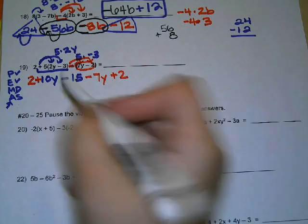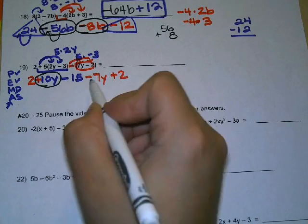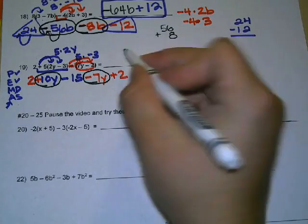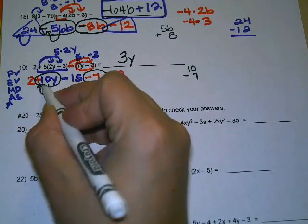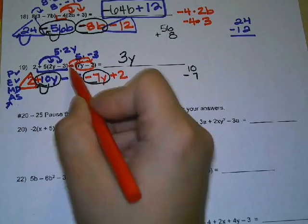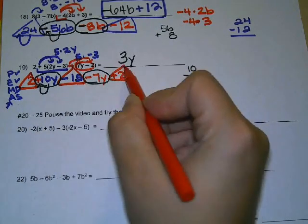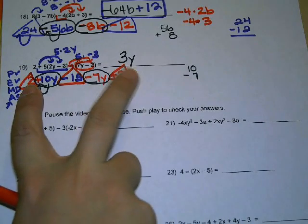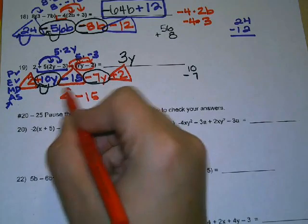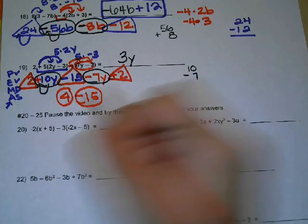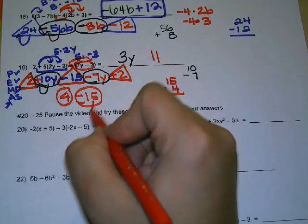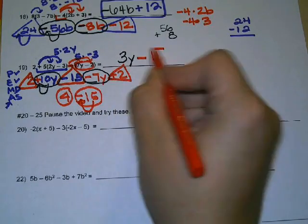Now we can combine the like terms. 10y with negative 7y: they're different, so we subtract — 10 minus 7 is 3y, and since 10 is bigger it's positive 3y. Then we can combine the constants: 2, negative 15, and 2. So 2 plus 2 is 4, and then 4 with negative 15 — they're different, so we subtract: 15 minus 4 is 11. Since 15 is larger and negative, that's a minus 11.